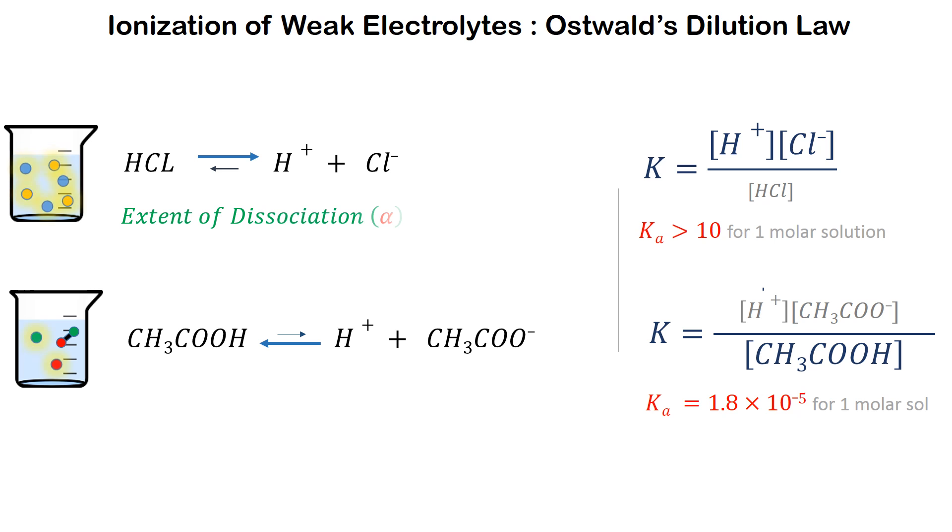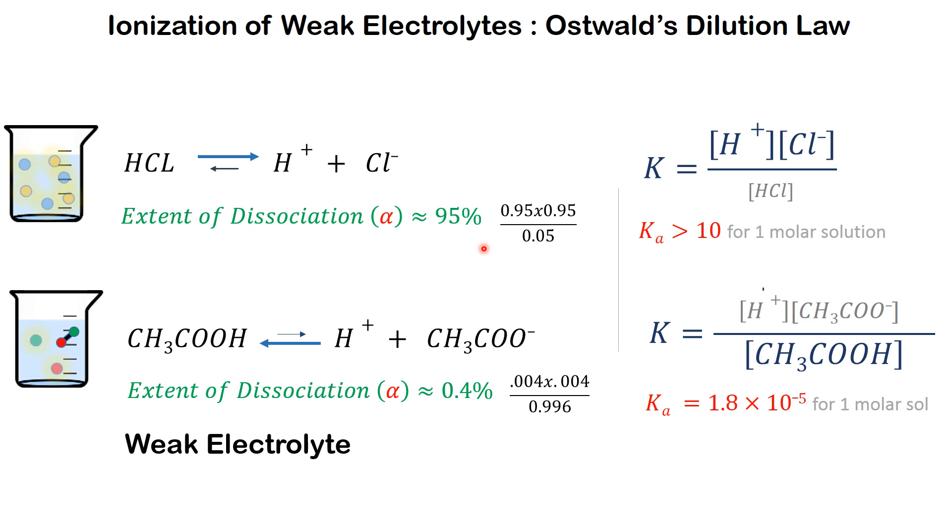To find the ionization constant of HCl which dissociates about 95% in water, we use this equation of equilibrium constant. When one mole of HCl is put in water, we get about 0.95 moles of H plus ions and 0.95 moles of Cl minus ions in water. We have only 0.05 moles of HCl which is undissociated. We therefore get a high Ka for HCl in water.